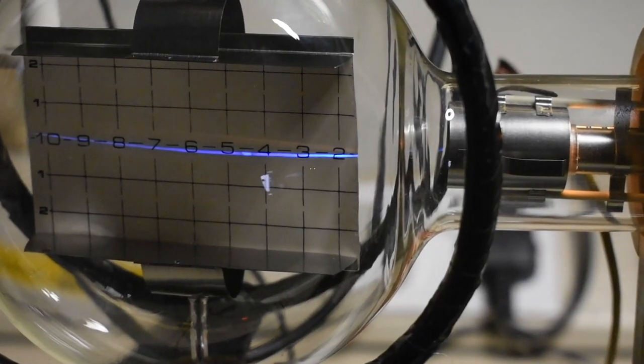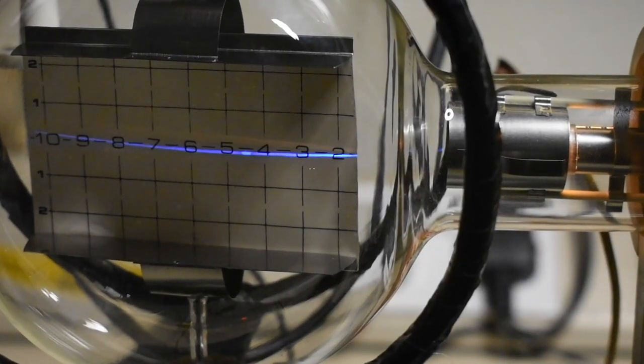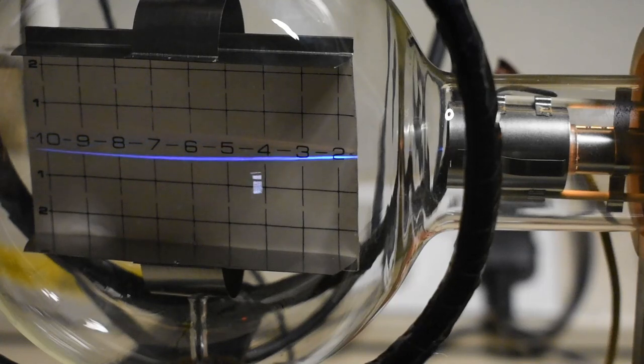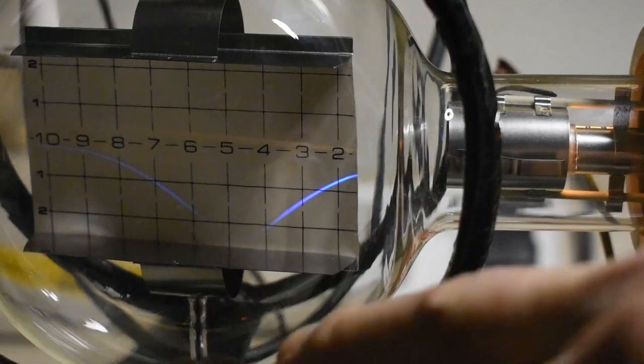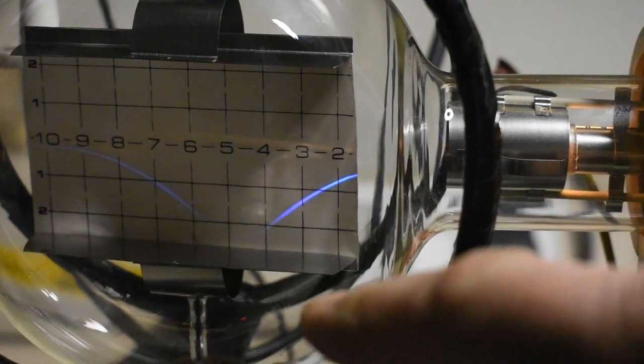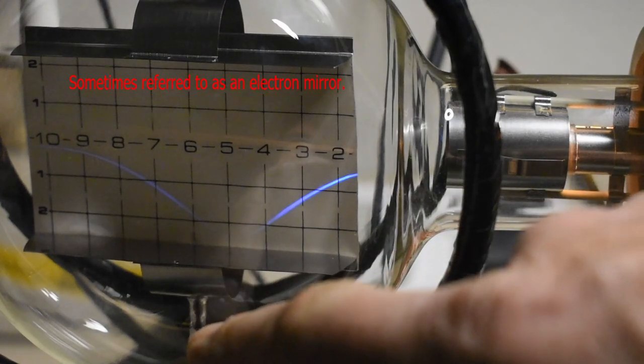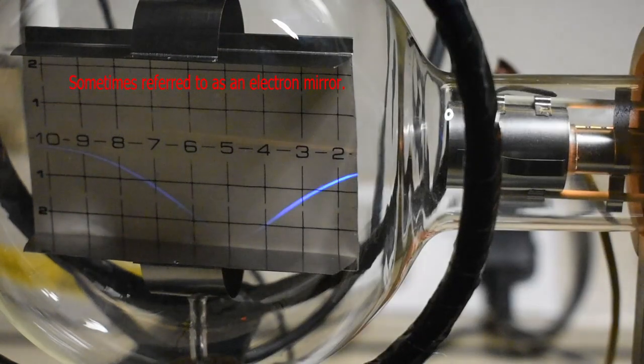However, this is where it gets a bit more interesting, because if I now keep increasing the current in the coil, we can bring the beam down so it's trying to hit the negative plate, which it won't do. And then the electrons are slowing down, but come back up off the plate.